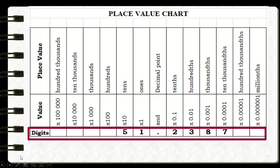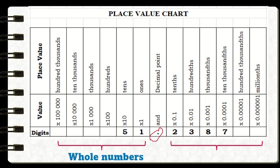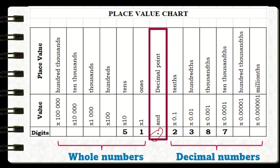Here we can see the different digits put together to form a number. The dot represents our decimal point. As we go to the left of our decimal point, we see whole numbers. If we go to the right of our decimal point, we see decimal numbers. Decimal numbers are less than one.